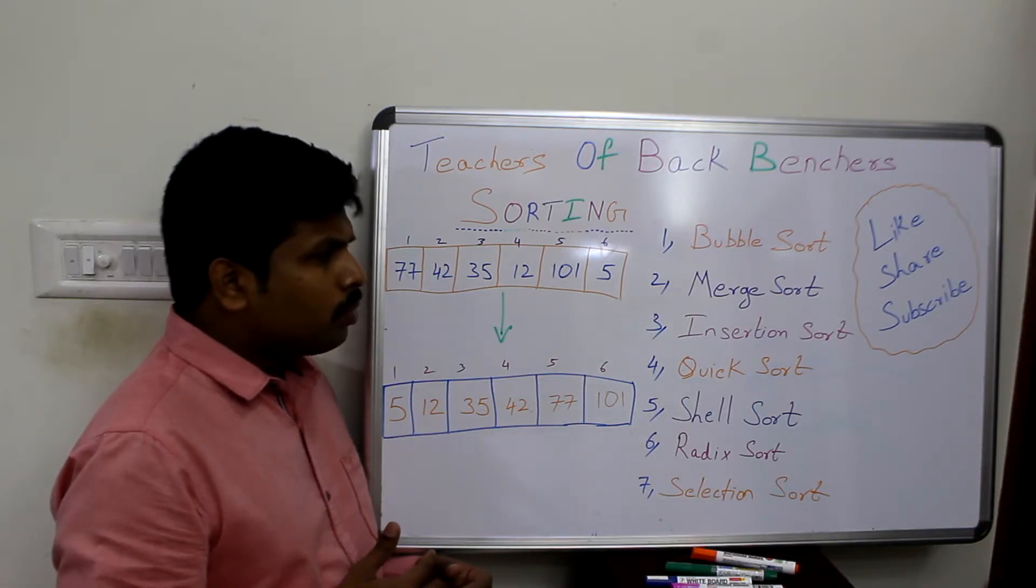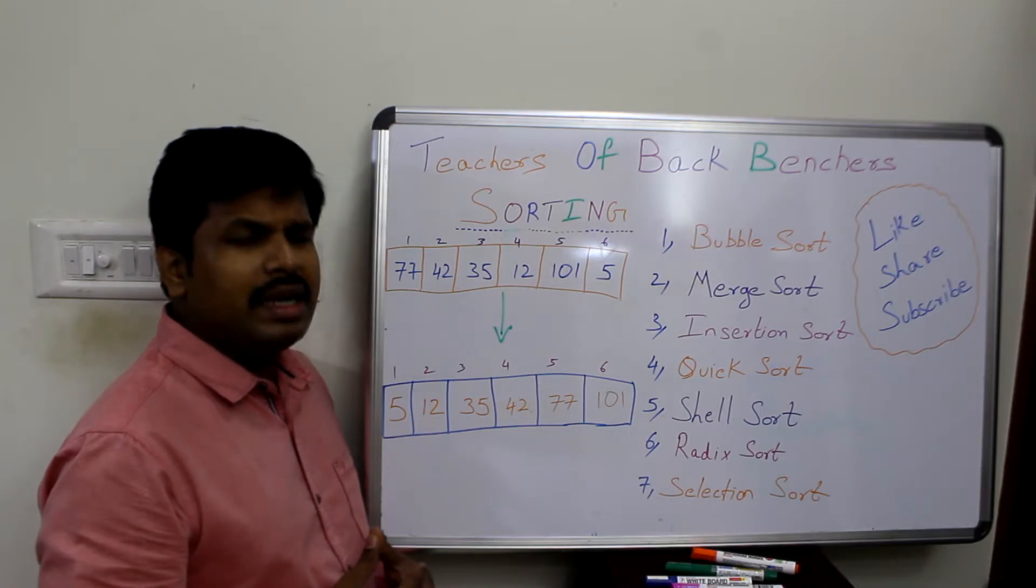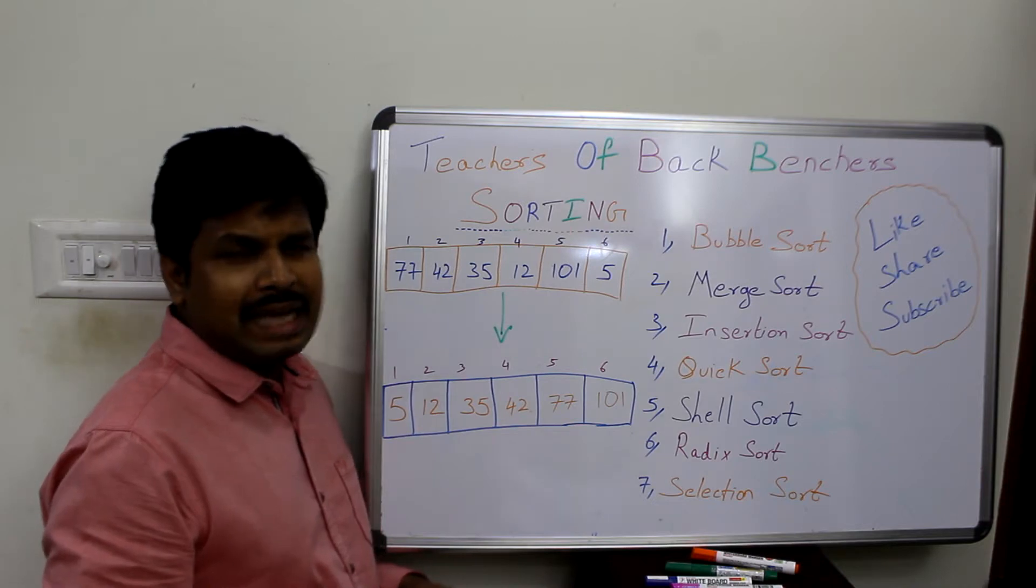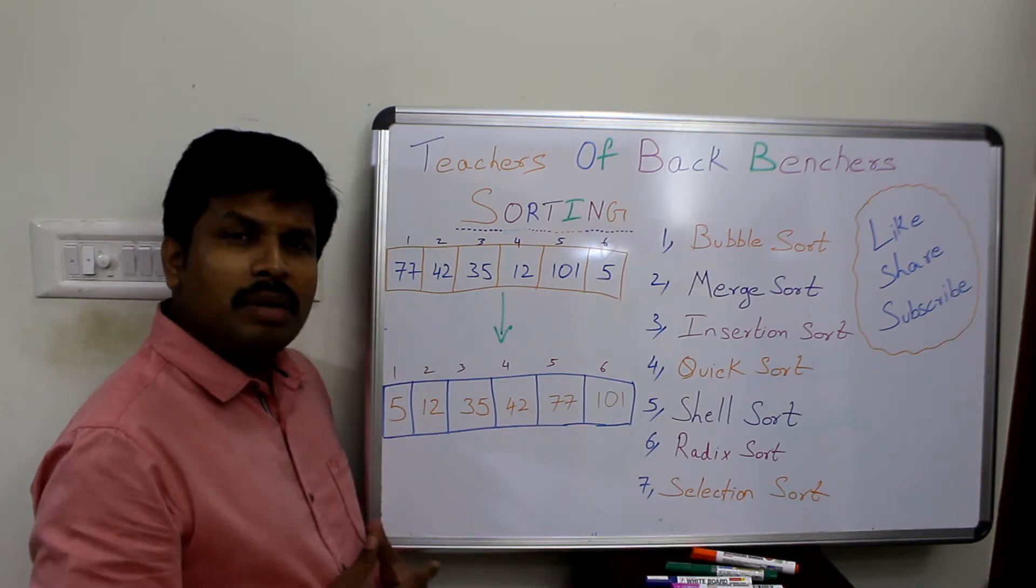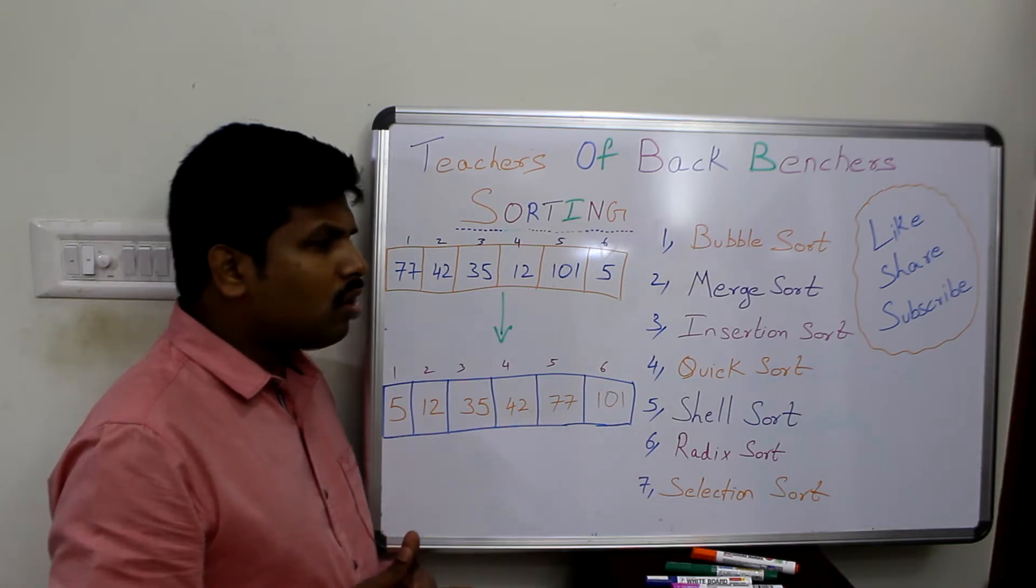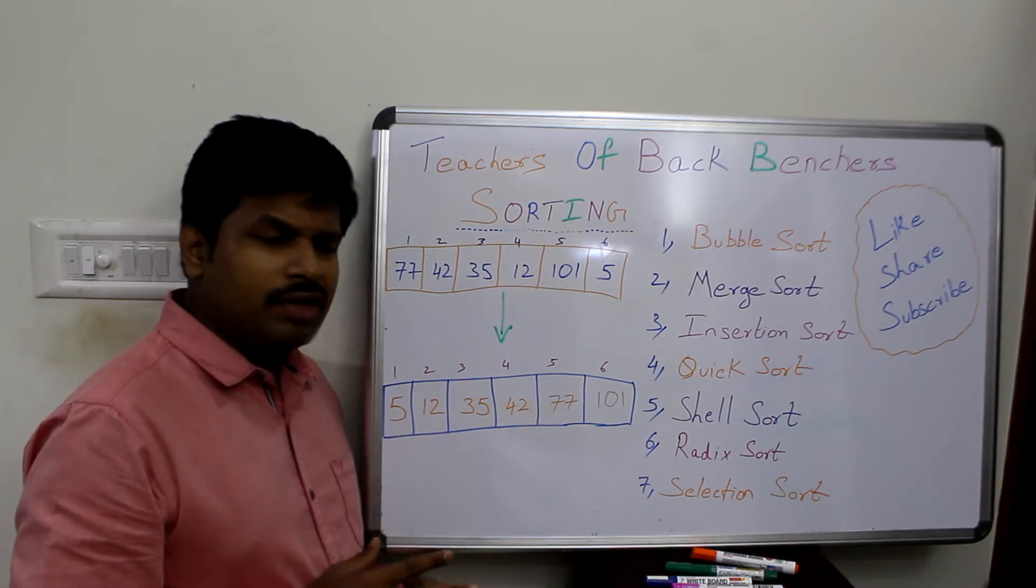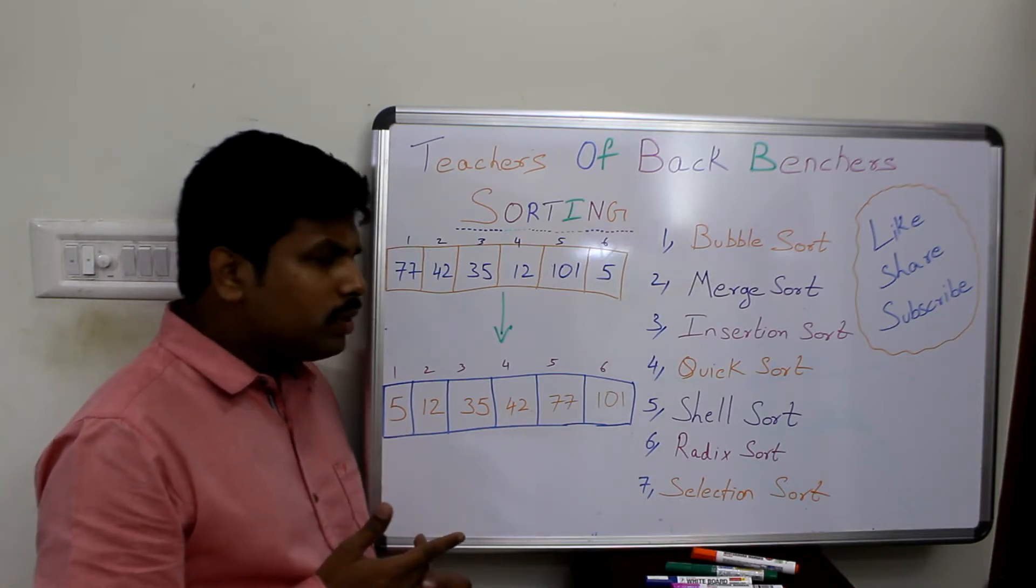What are the various techniques of sorting available? There are many types of sorting techniques, but in this playlist we are going to see the seven main types. The first one is called bubble sort, the second one is merge sort. Each word has its own meaning and definition. Third one is insertion sort, and the fourth one is quick sort.